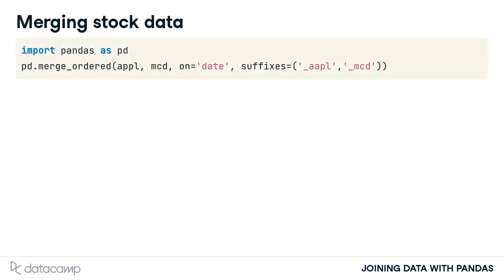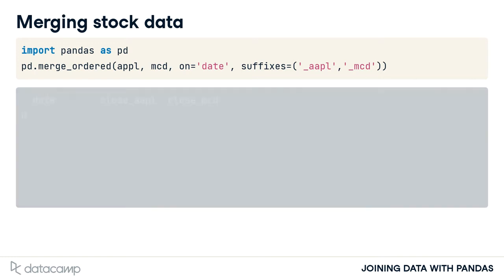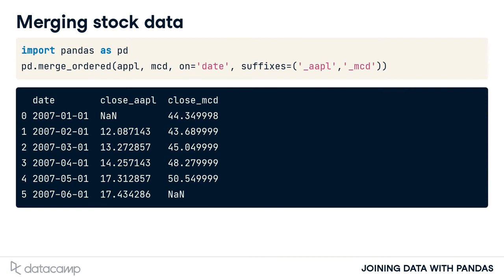The first two arguments are the left and right tables. We set the on argument equal to date. Finally, we set the suffixes argument to determine which table the data originated from. This results in a table sorted by date. There isn't a value for Apple in January or a value for McDonald's for June, since values for these time periods are not available in the two original tables.